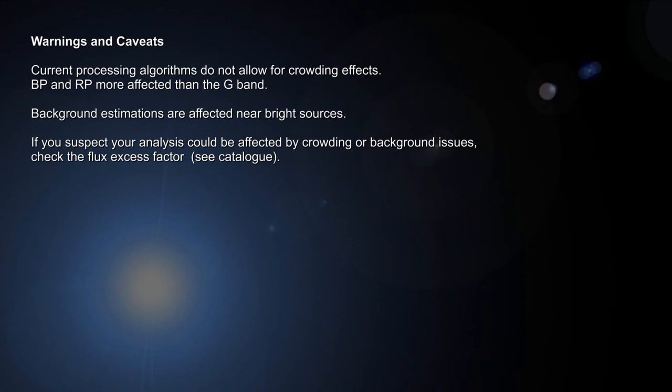For both these effects, a metric is available in the released catalogue which can indicate possible problems. This is the flux excess factor and is defined as the sum of the BP and RP fluxes divided by the G flux. If you suspect your analysis could be affected by crowding or background issues, check the flux excess factor for these sources.